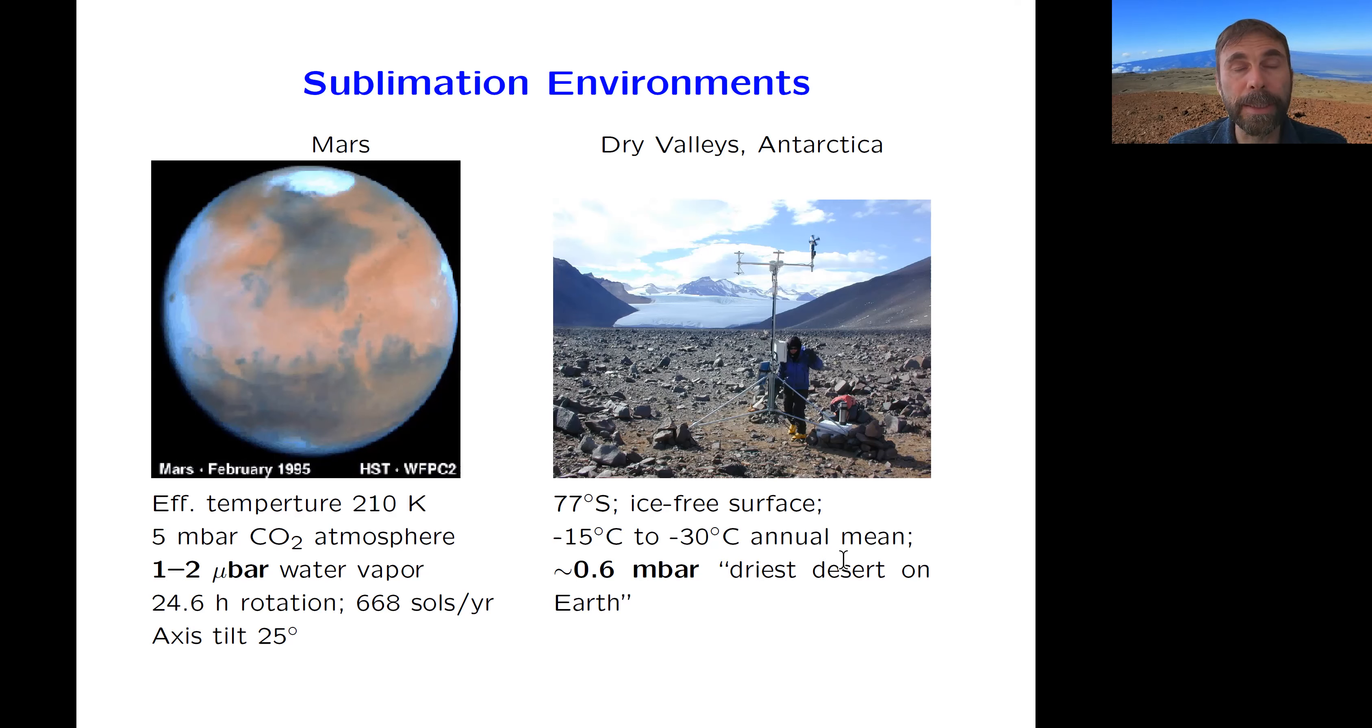So we talk about microbars of partial pressure, so it's 0.1 pascal, as opposed to on the order of a millibar of partial pressure, which would be 100 pascal. And even though the dry valleys are much more humid than Mars, it is considered the driest desert on Earth. So dry in terms of absolute humidity, not in terms of relative humidity.